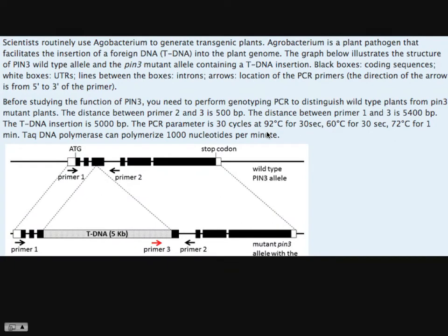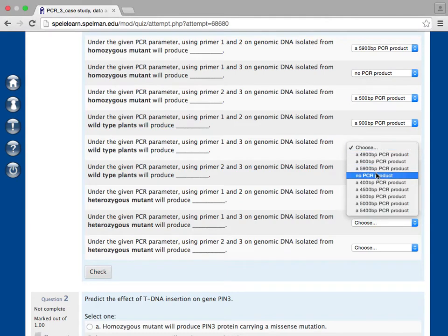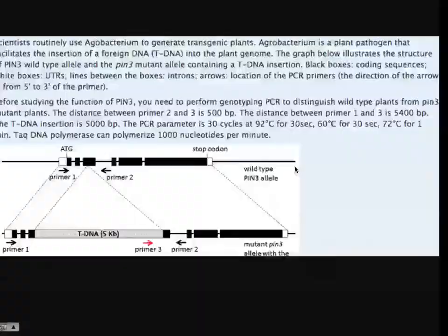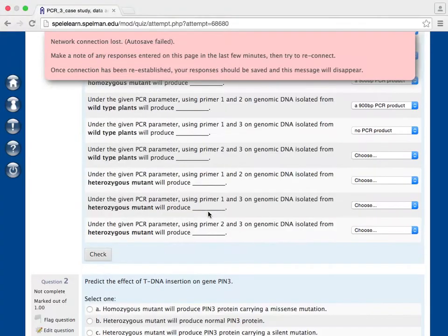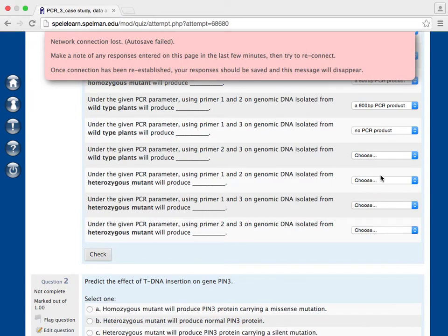The next question is, using primer 1 and 3 on genomic DNA from the plant in wild type. That should give you no product. Primer 2 and 3 on wild type. 2 and 3 on wild type, the primer 3 is only in the T-DNA insert. Wild type doesn't have this one. So 2 and 3 should also give no product.